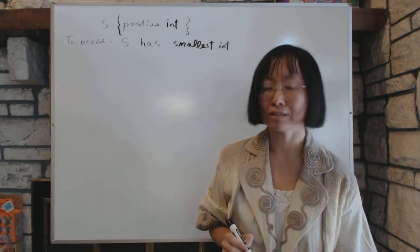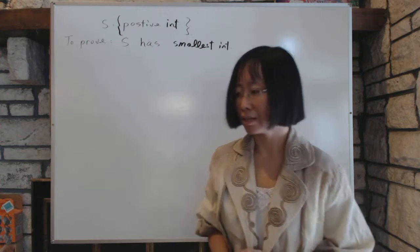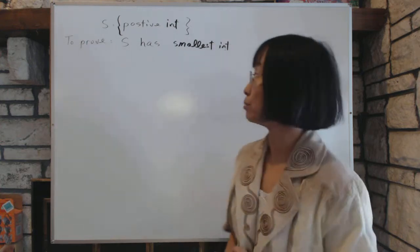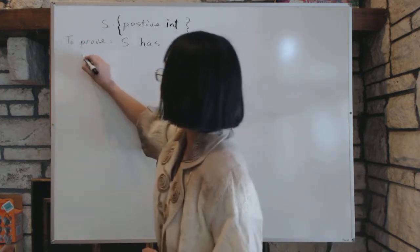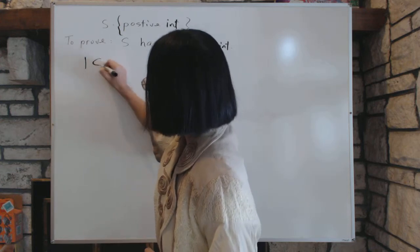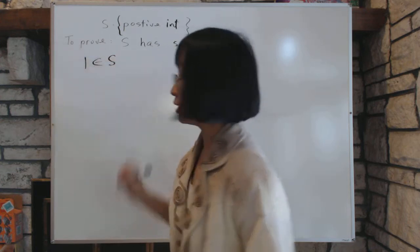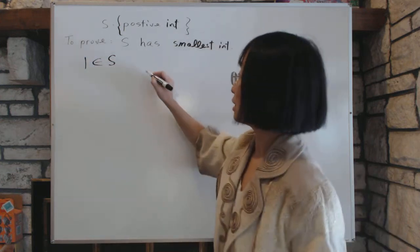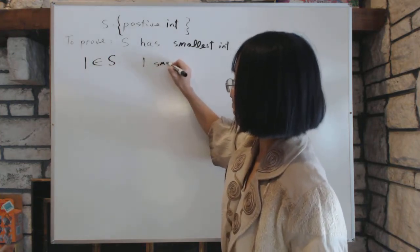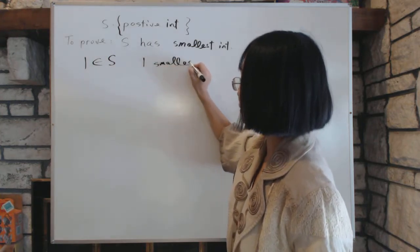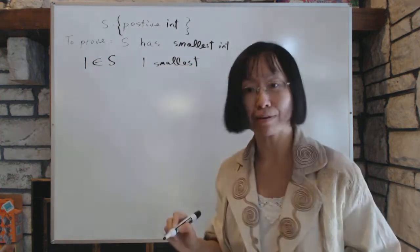Now to prove that, we will consider two situations. Now the first situation is consider the number one. Now is the number one inside S? That is, does S contain one? If S contains one, then one is the smallest value. Because one is simply the smallest natural number. So we don't have to think about it.